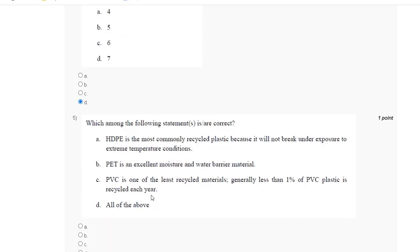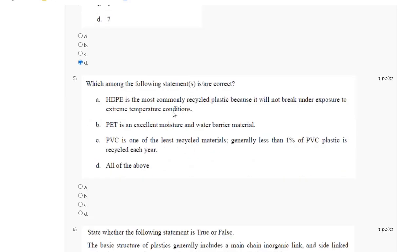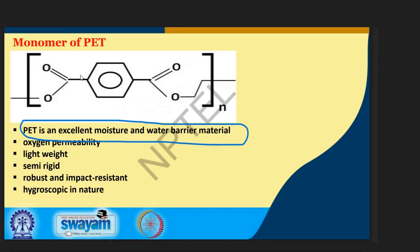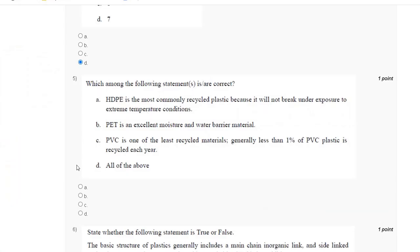Question number five: which among the following statements is correct? PVC has excellent moisture and water resistance. The correct answer for question number five is D, all of the above. PVC plastic material density is generally less than one.